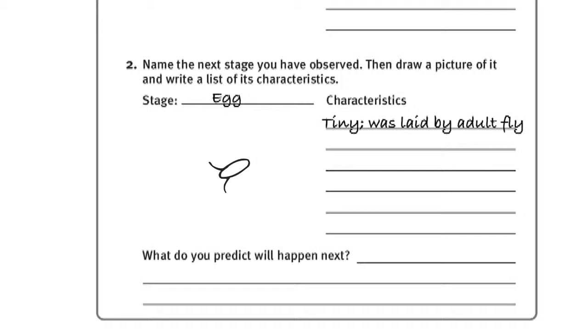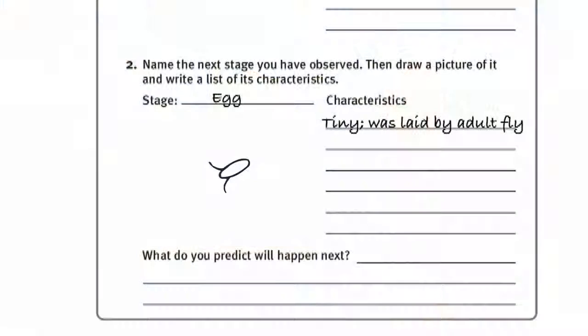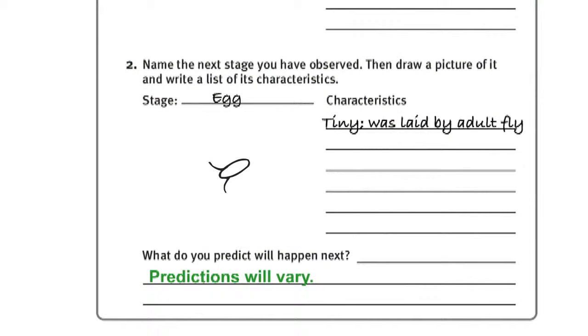Then ask, what do you think will happen to the egg? Have students write their predictions on their activity sheets. Encourage students to continue their daily observations, noting changes on their activity sheets. To conclude Session 1, have students return their vials, magnifiers, and file folders to the designated area.